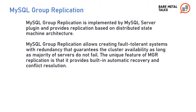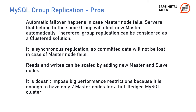MySQL Group Replication is implemented as a MySQL Server Plugin and provides replication based on a distributed state machine architecture. It allows creating fault-tolerant systems with redundancy that guarantees the cluster's availability as long as a majority of servers do not fail. The unique feature of MySQL Group Replication is that it provides built-in automatic recovery and conflict resolution. A pro is that automatic failover happens if the master node fails — servers belonging to the same group will elect a new master automatically, so group replication can be considered a clustered solution. It uses synchronous replication, so committed data will not be lost if the master node fails.